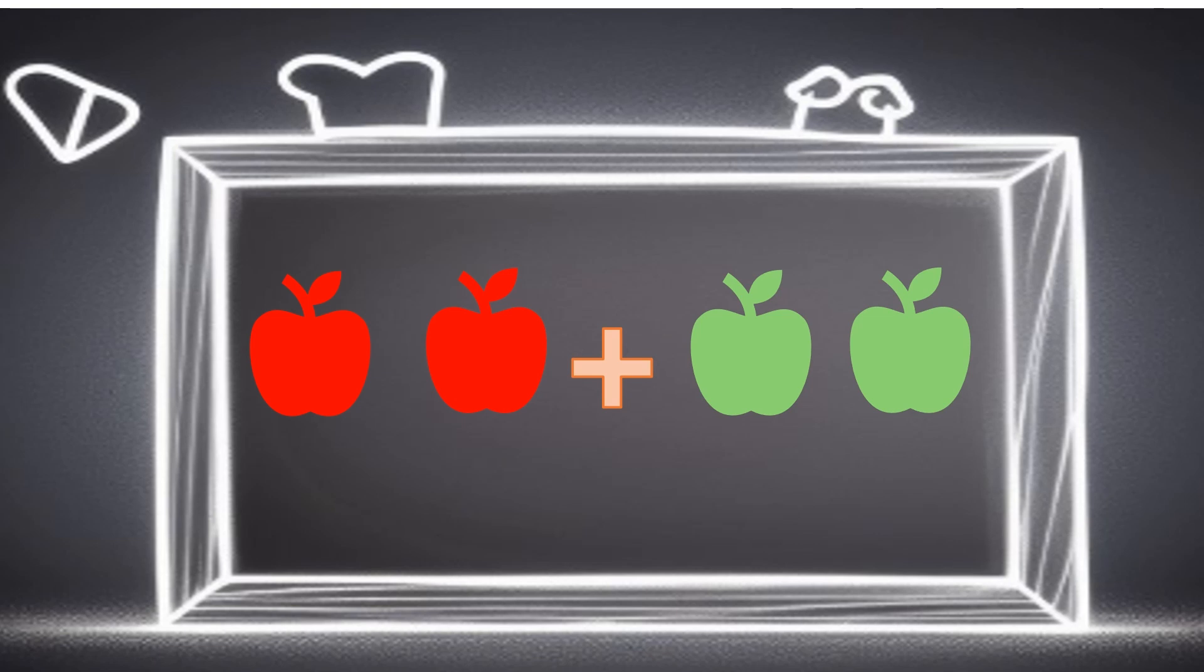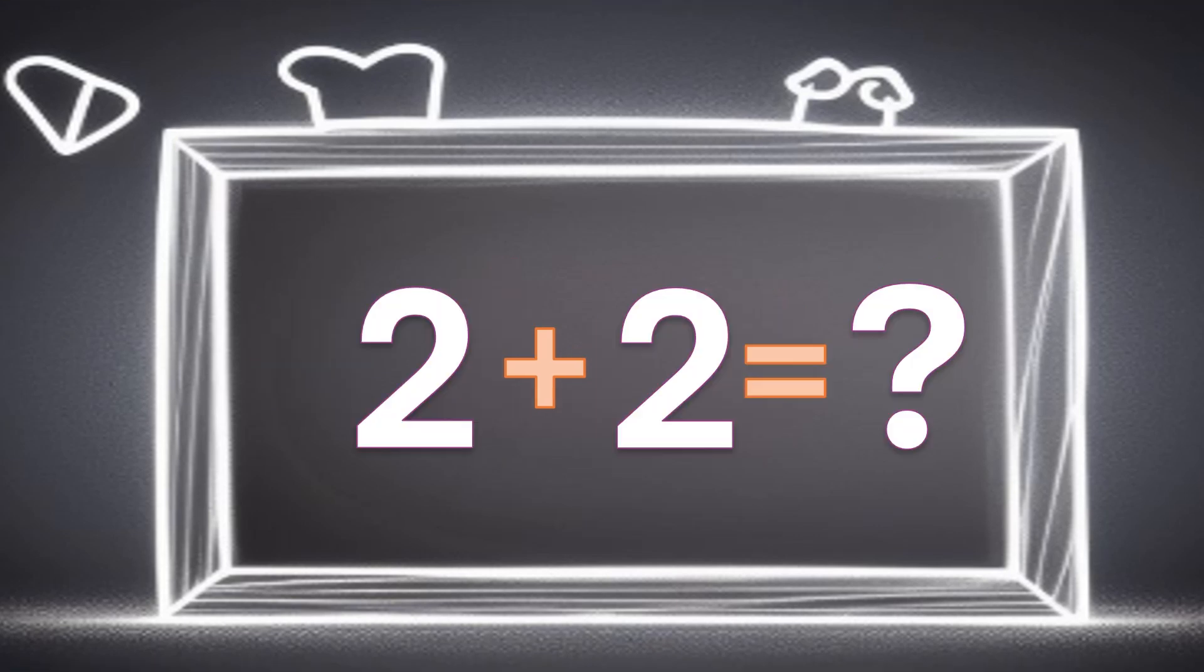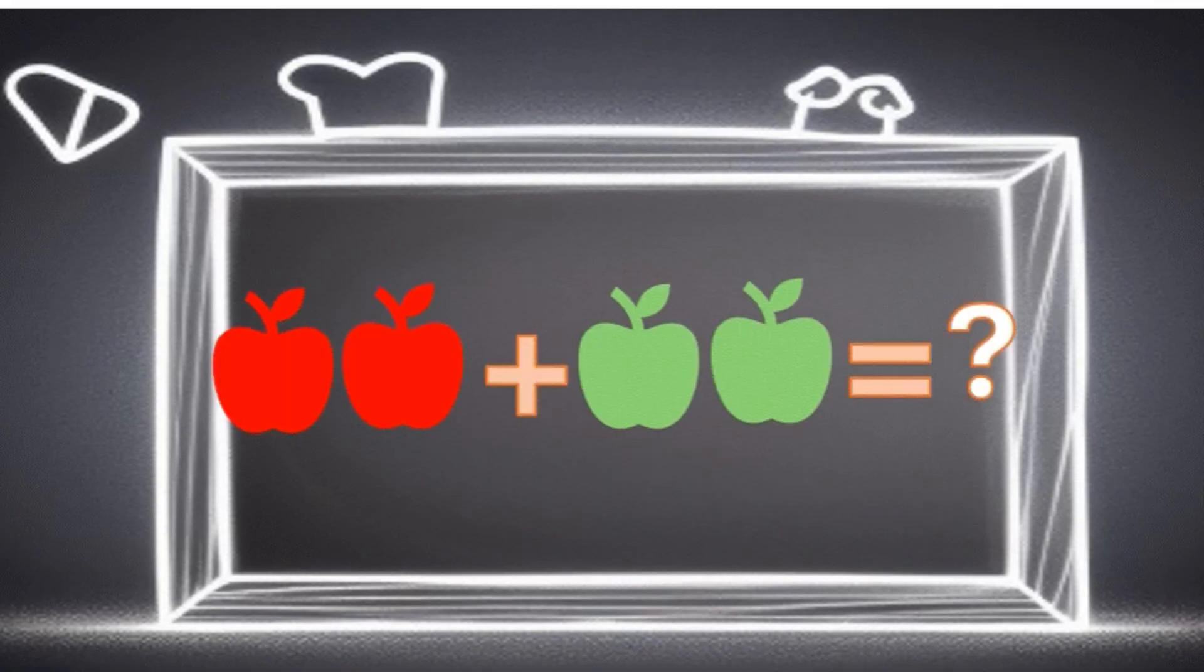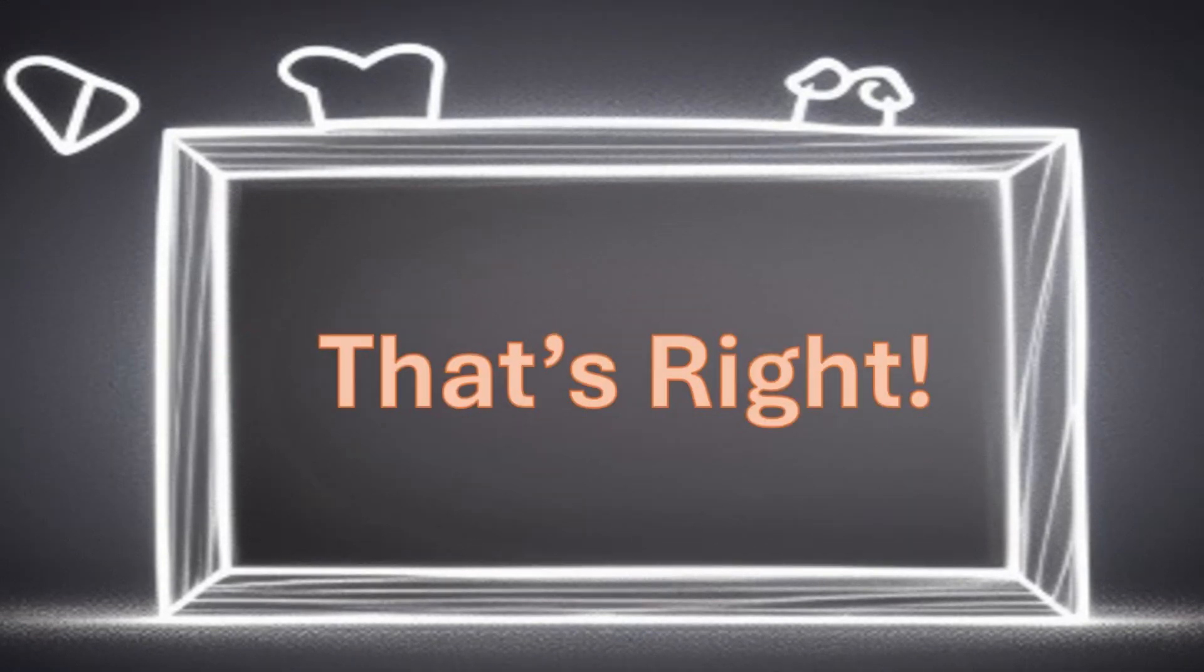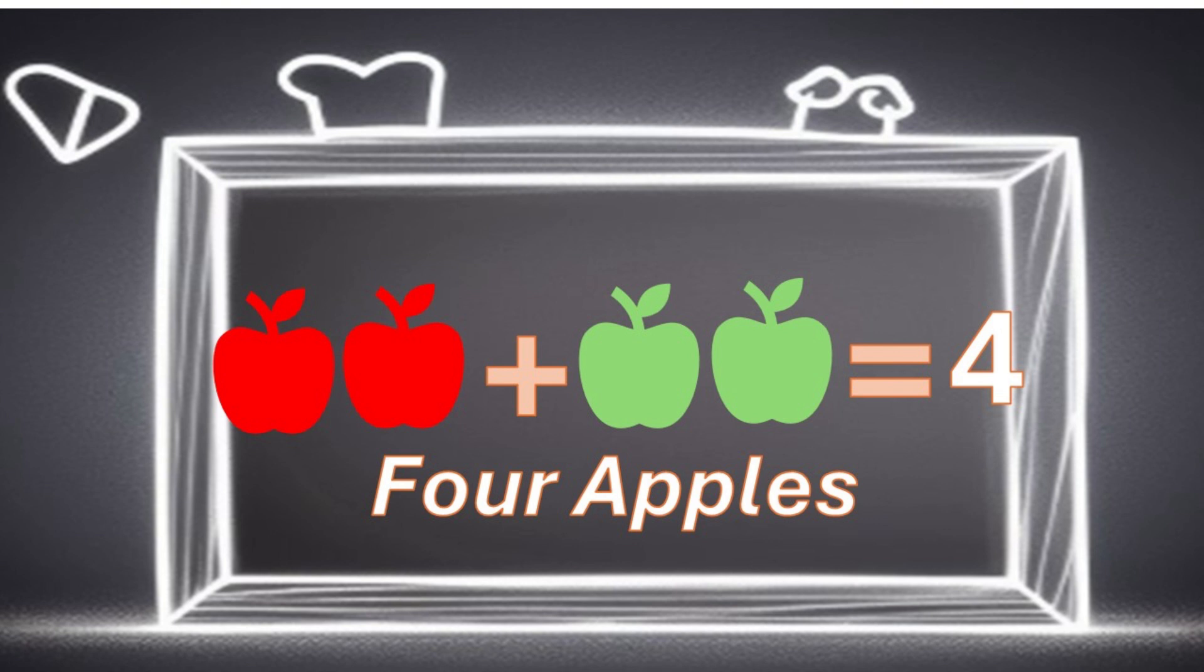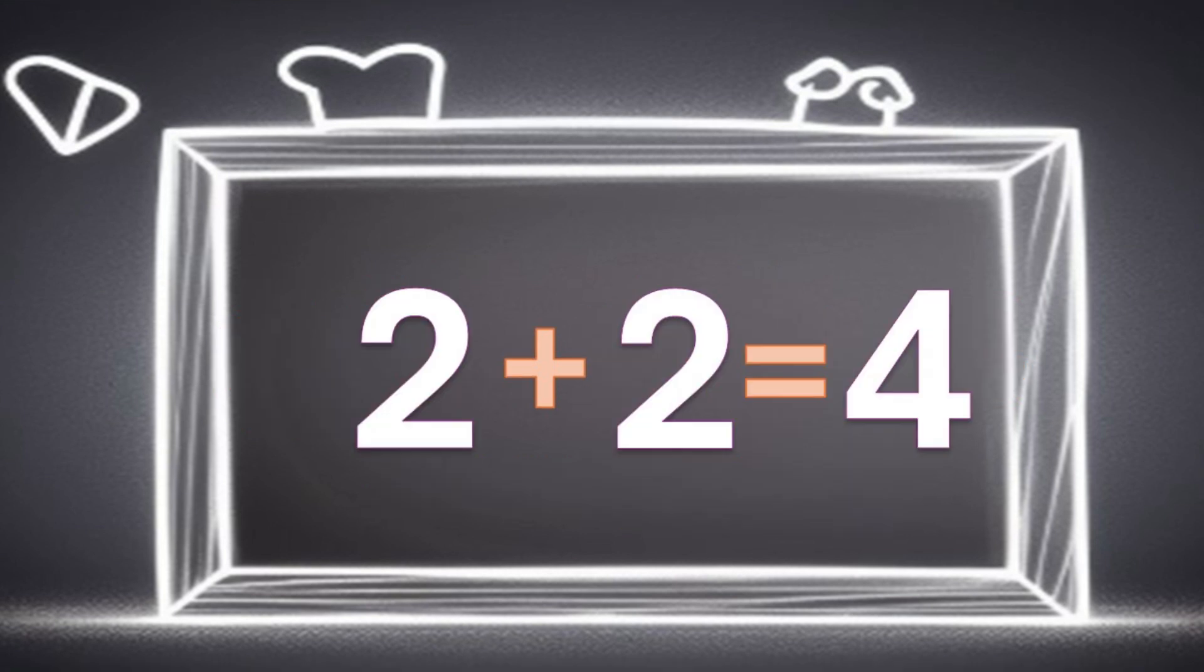If I have two apples and I give you two more apples, how many apples do we have in total? That's right, four apples. We put two apples and two apples together and we get four apples. We can say it like this, two plus two equals four. Let's try saying it together. Two plus two equals four.